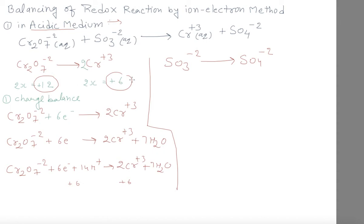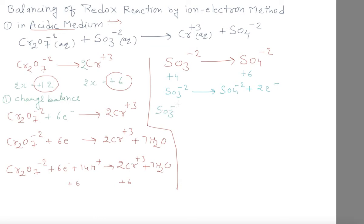On the other side, for sulphur the oxidation number goes from plus 4 to plus 6, a change of 2, as I told you in previous classes. There are 2 extra electrons lost on this side, so we add 2 electrons: SO₃²⁻ gives SO₄²⁻ plus 2 electrons. Now sulphur is balanced. Oxygen: there is 1 less on the left — 3 here and 4 there — so I add 1 water molecule: SO₃²⁻ + H₂O gives SO₄²⁻ + 2e⁻.